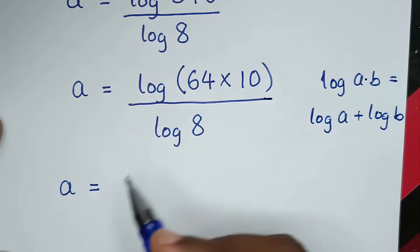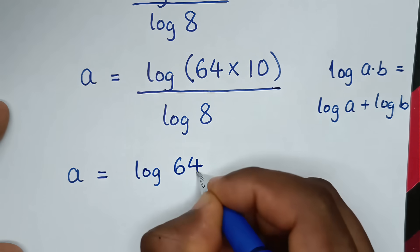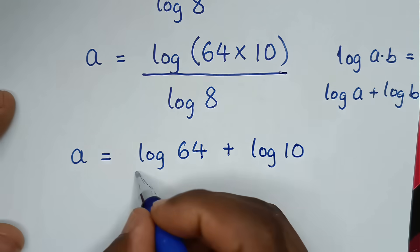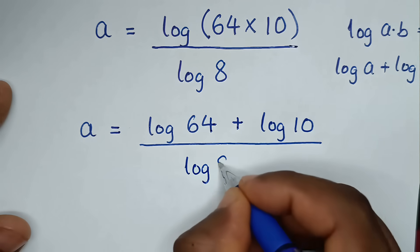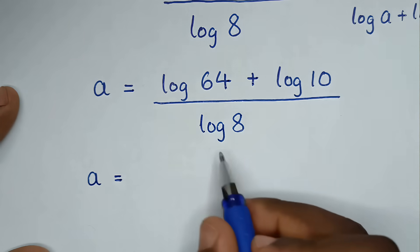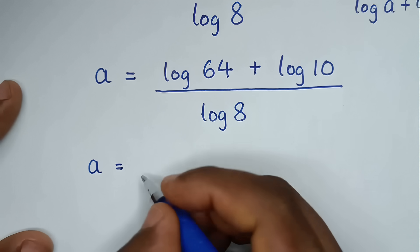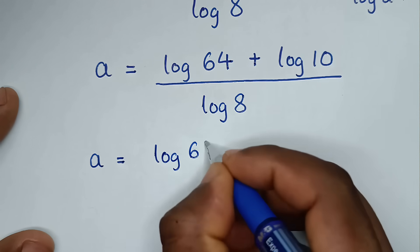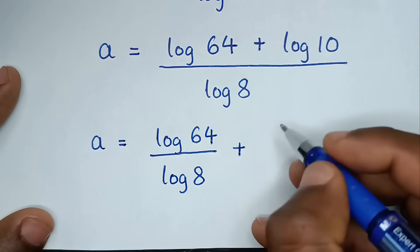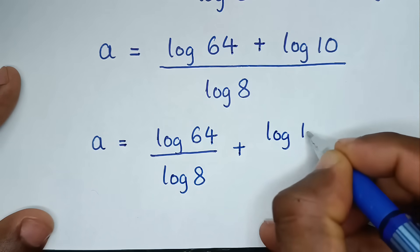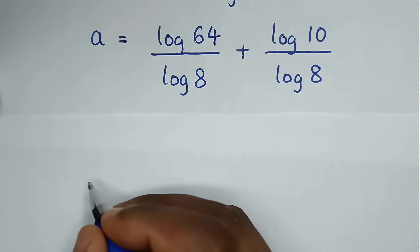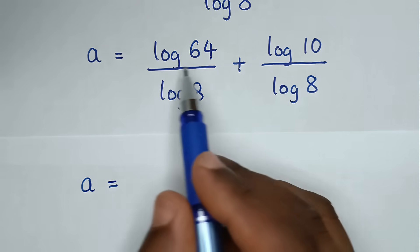So it will be log of 64 plus log of 10, over log of 8. Then the next step: A is equal to log of 64 over log of 8 plus log of 10 over log of 8. In the next step, log of 64 is the same as 8 squared.